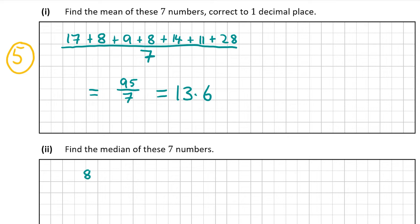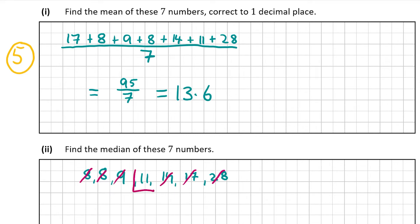The lowest number we have is 8. We have 8 again, then 9, then 11, 14, 17, and finally 28. So we have to work out the number in the middle. You can cancel the first number 8 with the last number 28, then the second number with the second last number, and the third number with the third last number. And that leaves us with the number in the middle, which is 11.